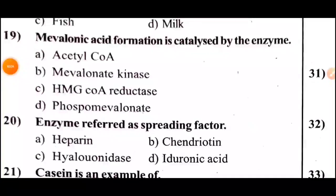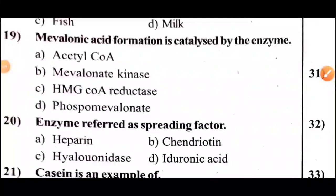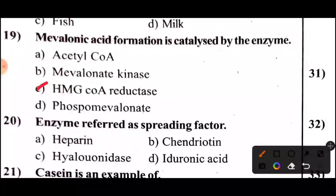Question 19: Mevalonic acid formation is catalyzed by which enzyme? Options A, B, C, D. Answer: Option C, HMG CoA reductase. Mevalonic acid formation is catalyzed by HMG CoA reductase.